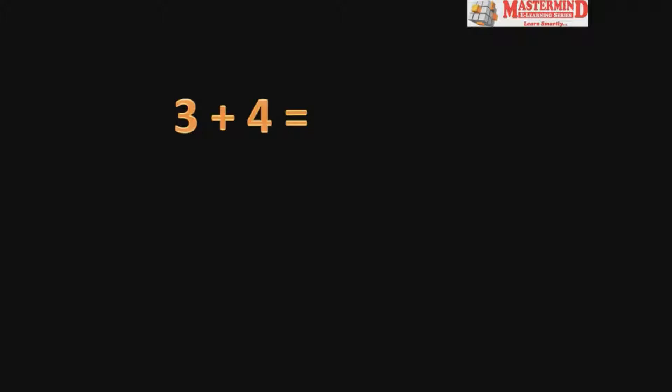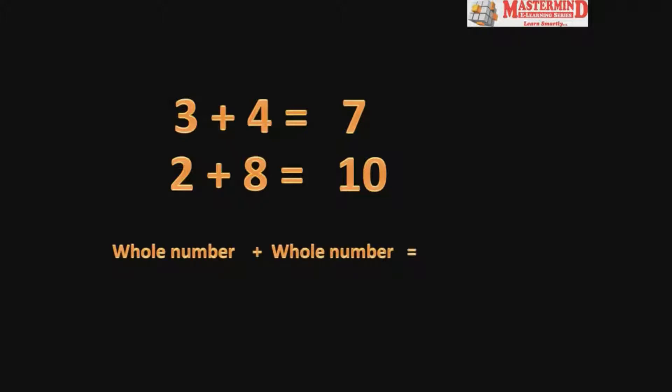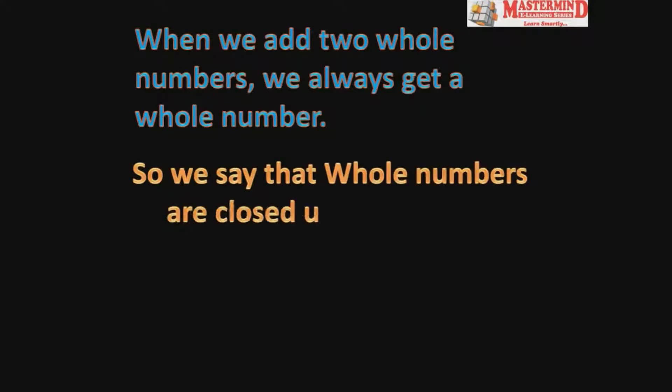We begin with the properties of addition of whole numbers. Let's start by adding two whole numbers: three plus four equals seven. If we add two more numbers, say two and eight, the answer is ten. We observe that adding one whole number to another whole number gives a sum that is also a whole number. This property of addition is called the closure property of addition — when we add two whole numbers, we always get a whole number.